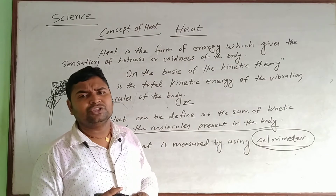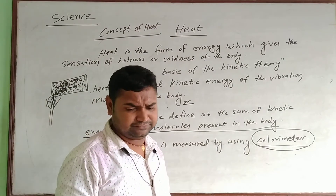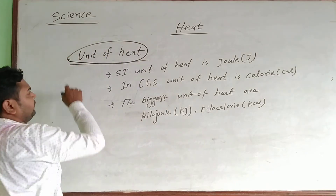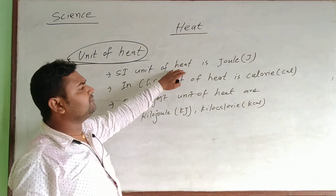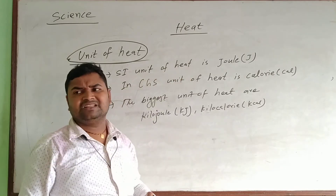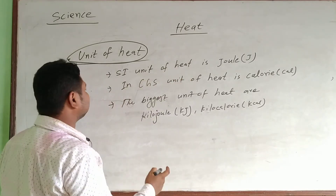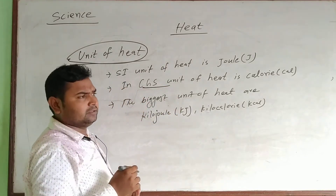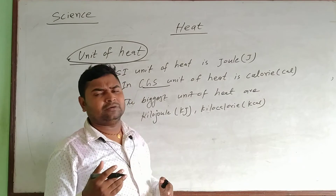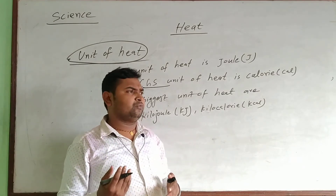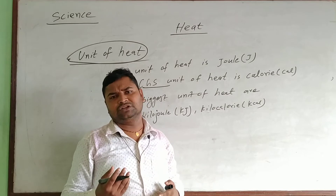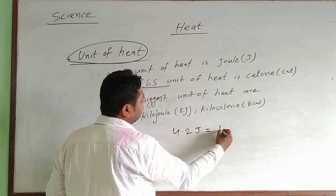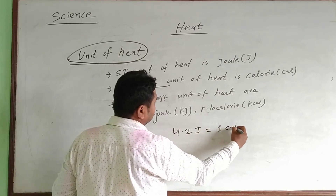Now let's talk about the units of heat. The SI unit of heat is the Joule — it is measured in Joules. Whereas in CGS units, heat is measured in calories. 4.2 Joules is equal to 1 calorie.